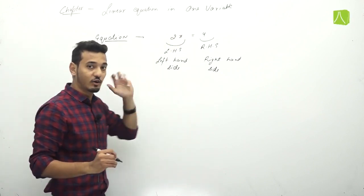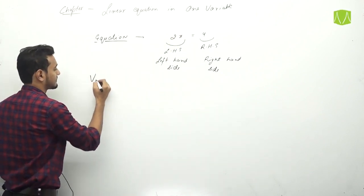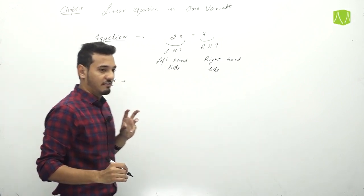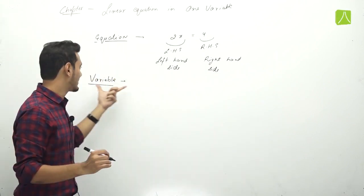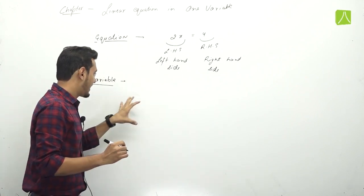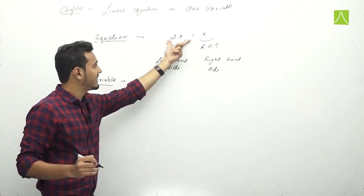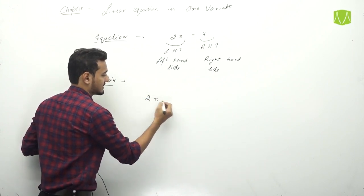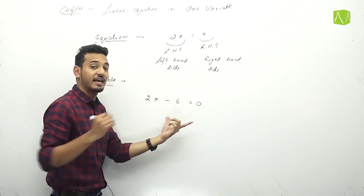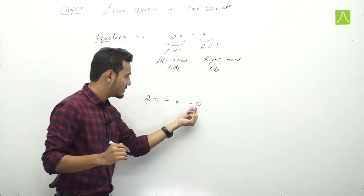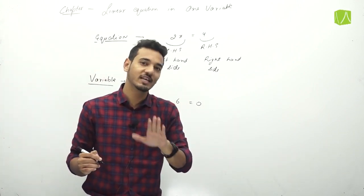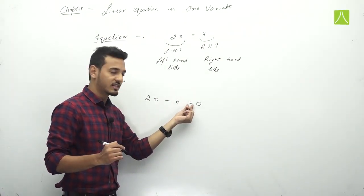The second thing is variable. What is a variable? A variable is the thing that varies — it changes. We call it a variable. For example, 2x minus 6 equals to 0 is an equation because it has an equals sign. Left-hand side has 2x minus 6, and right-hand side is 0.